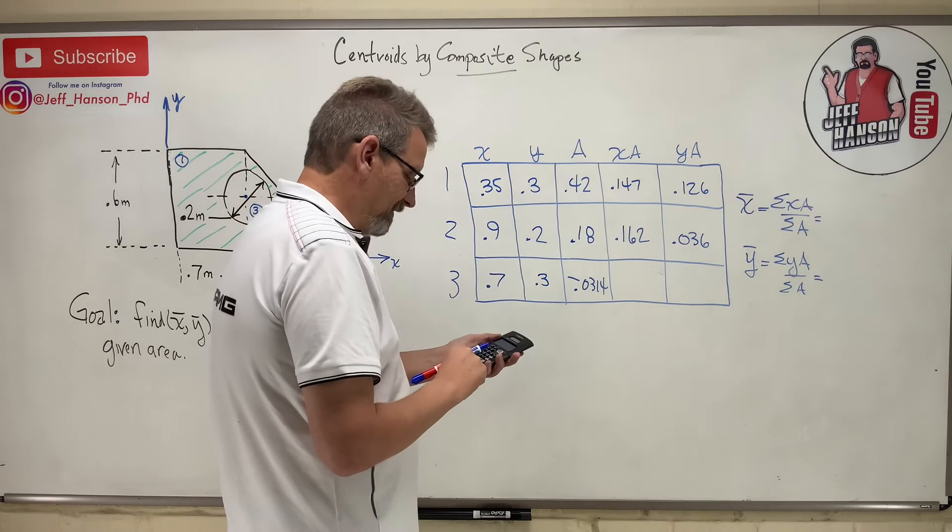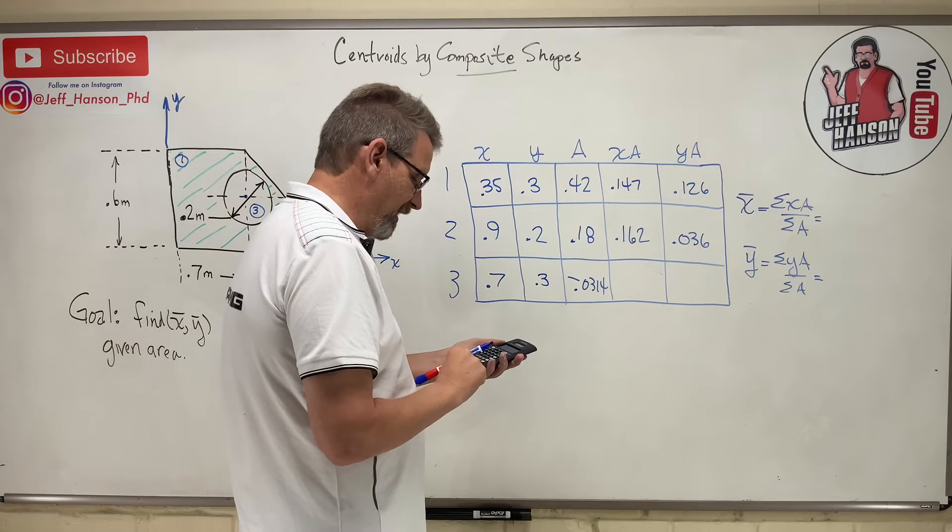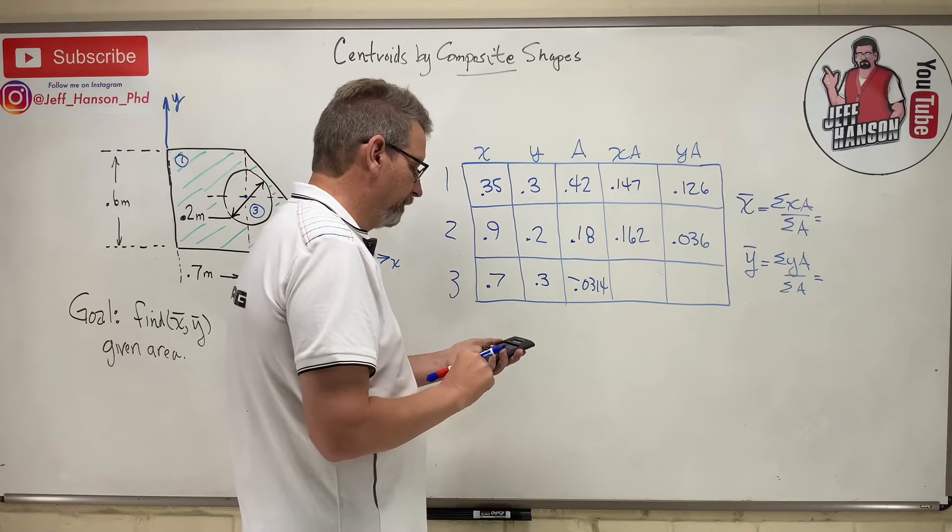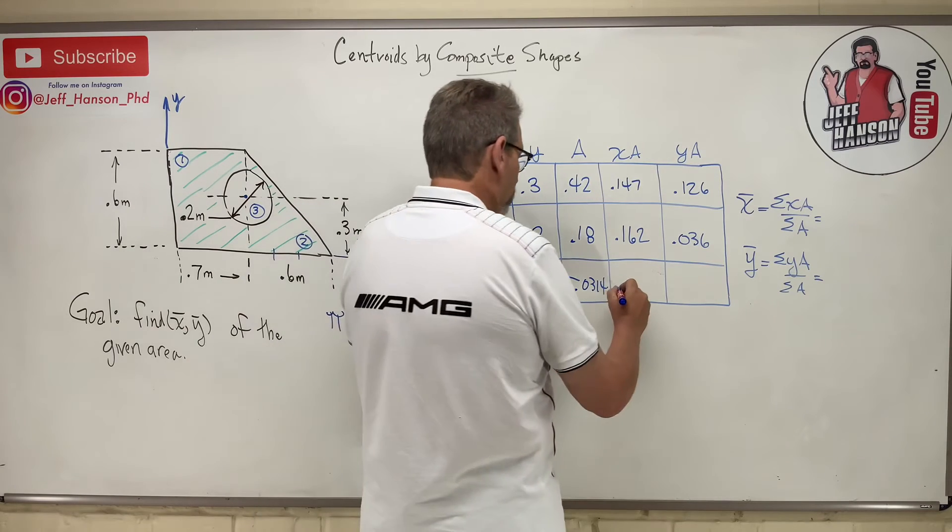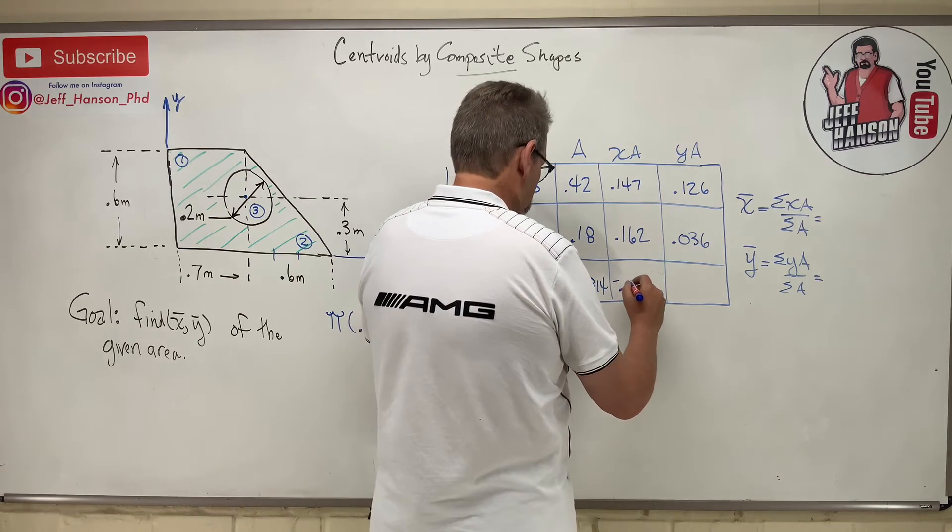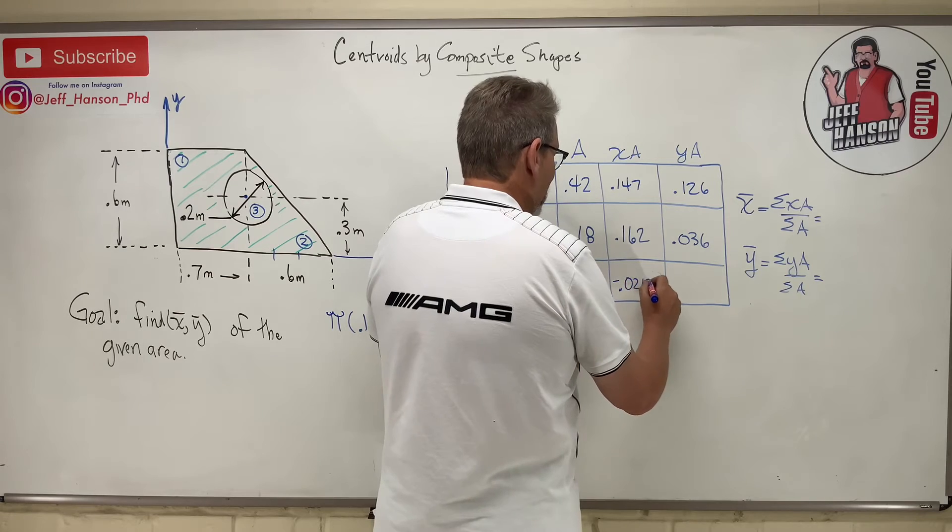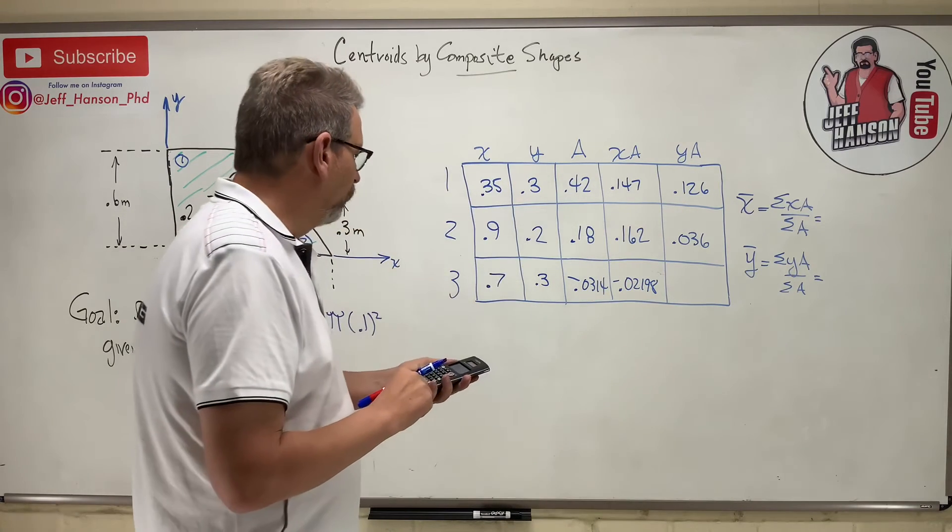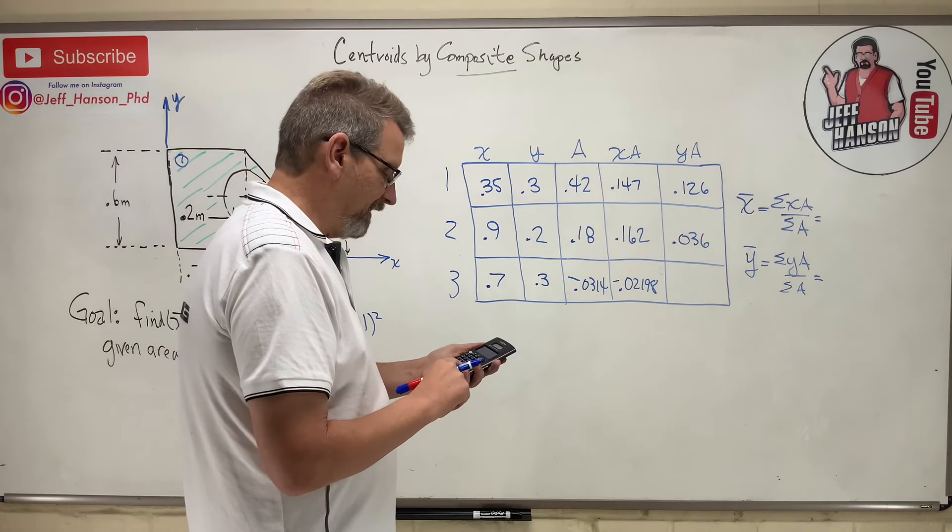And then finally, 0.7 times negative 0.0314 is negative 0.0198. And then one more: 0.3 times negative 0.0314 equals negative 0.00942.